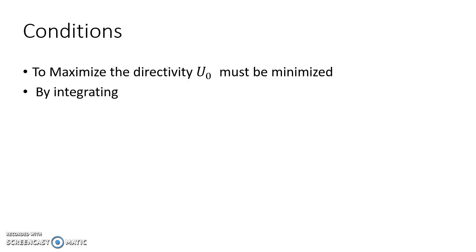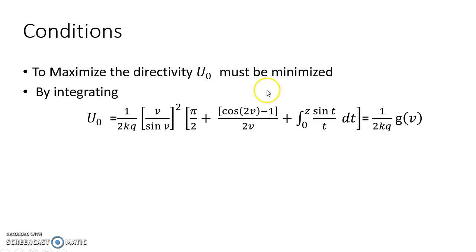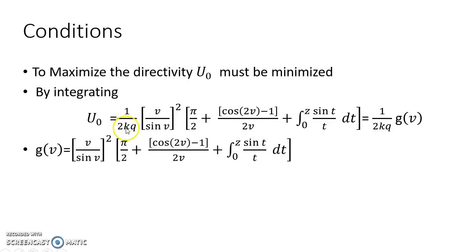To maximize directivity, u₀ must be minimized. The array factor equation feeds into the intensity equation, which feeds into the directivity equation. To maximize directivity, the isotropic radiator intensity u₀ must be minimized. During the minimization process while integrating for u₀, we define the parameter g(v), and to minimize u₀ we must also minimize g(v).